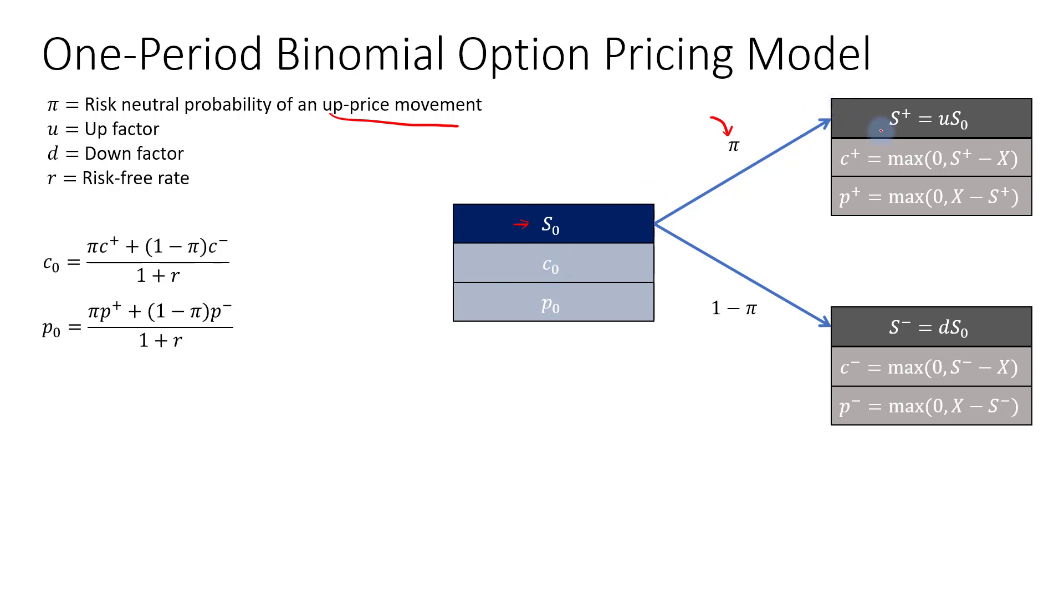We will compute the price after one period. So the price could either move up, which is denoted by S plus, or it could go down, then the price would be denoted by S minus.